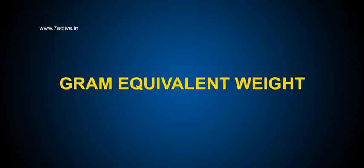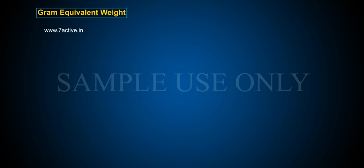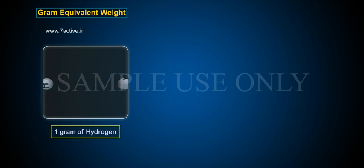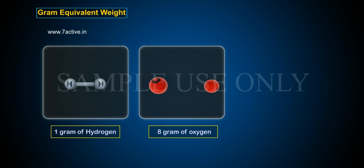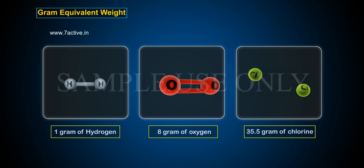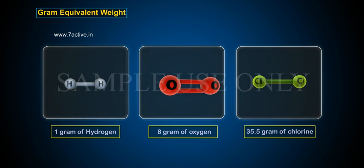Gram Equivalent Weight. Equivalent weight of a substance is the weight of substance which combines with 1 gram of hydrogen, or 8 gram of oxygen, or 35.5 gram of chlorine. It can be calculated with the following formula.